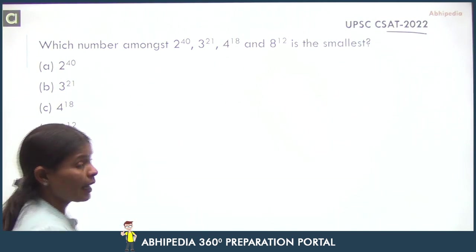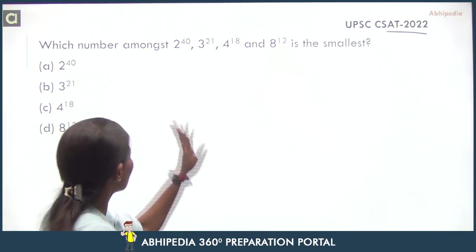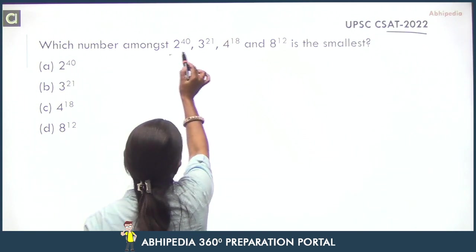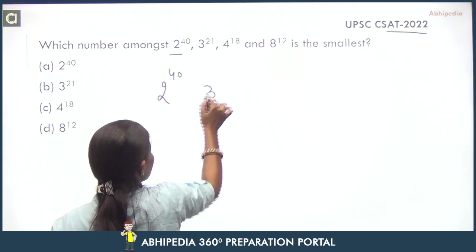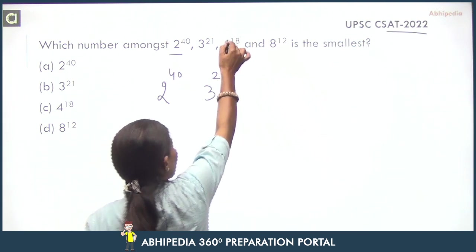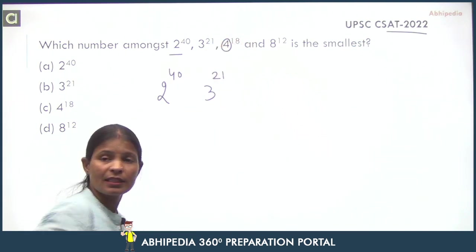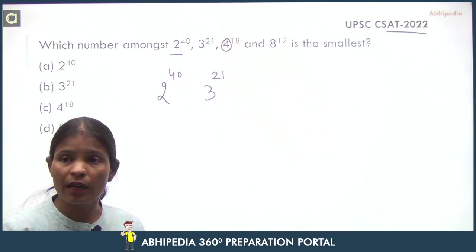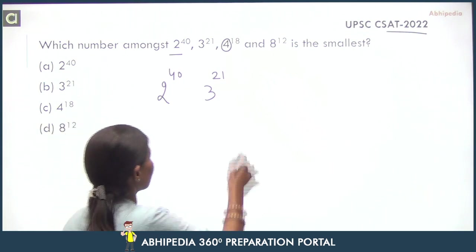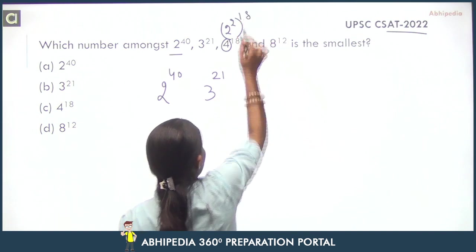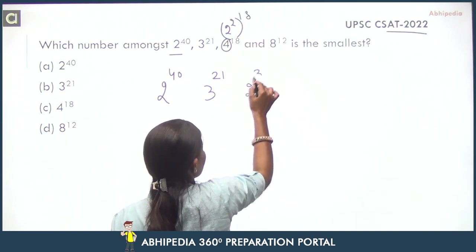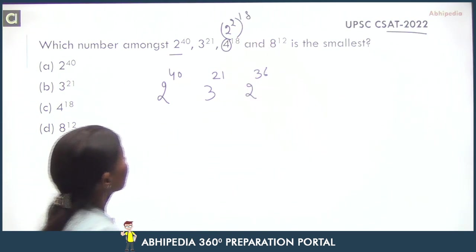If you can see a little bit of logic here, 2 raised to power 40, and 3 raised to power 21. If we convert 4 to base 2, 4 is 2 raised to power 2, so this is 2 raised to power 2 raised to power 18, that means this is 2 raised to power 36.